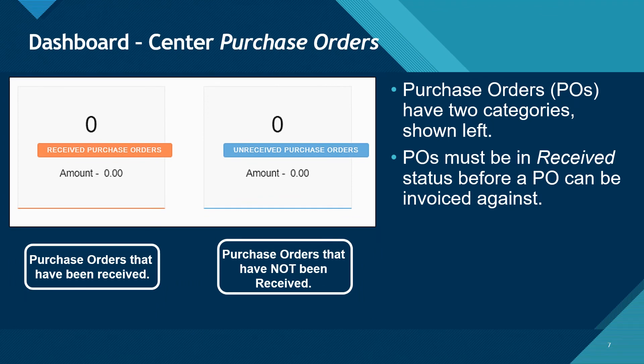Shown here is the purchase order overview screen. You can reach this screen by clicking purchase orders on the dashboard center menu. Purchase orders have two categories: received and unreceived. Purchase orders must be in received status for an invoice to be placed against them. We will further discuss purchase orders in an additional video provided by CMHA.